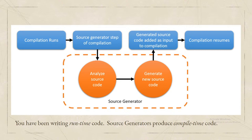Source generators will intercept the compilation process at the source generator step. They will run your source generator code, produce more source code, and inject that into the compiler process, where the compiler will then resume, finish the build, and output to IL. The source generators are the orange area in the diagram — the new part we'll be exploring.